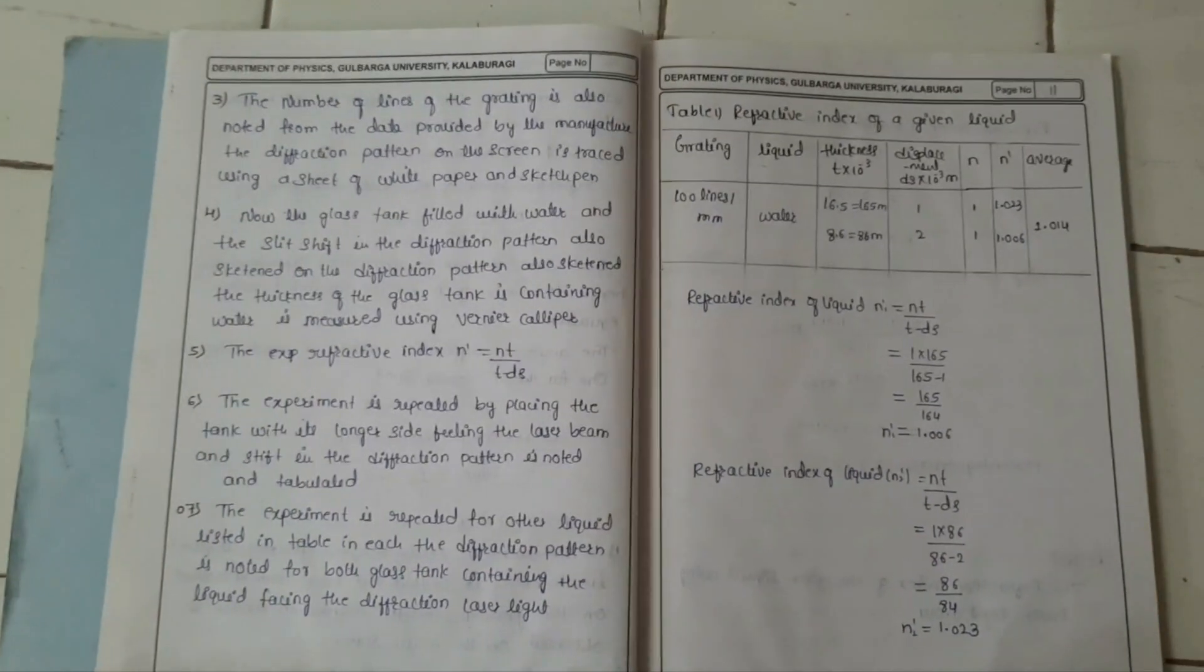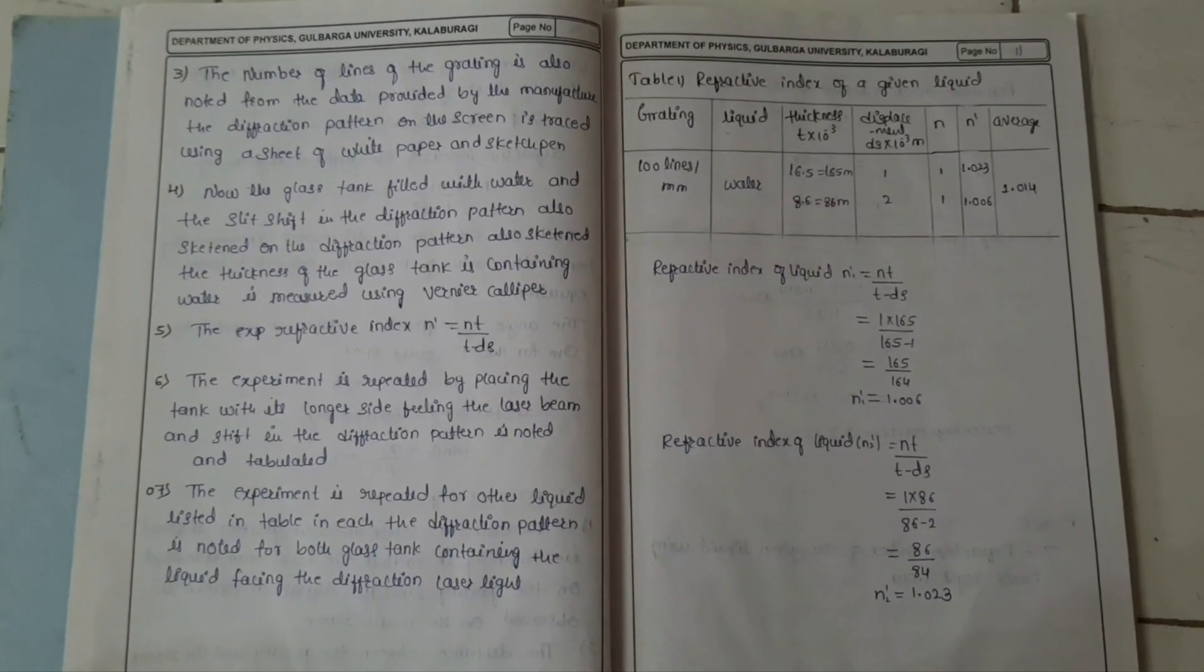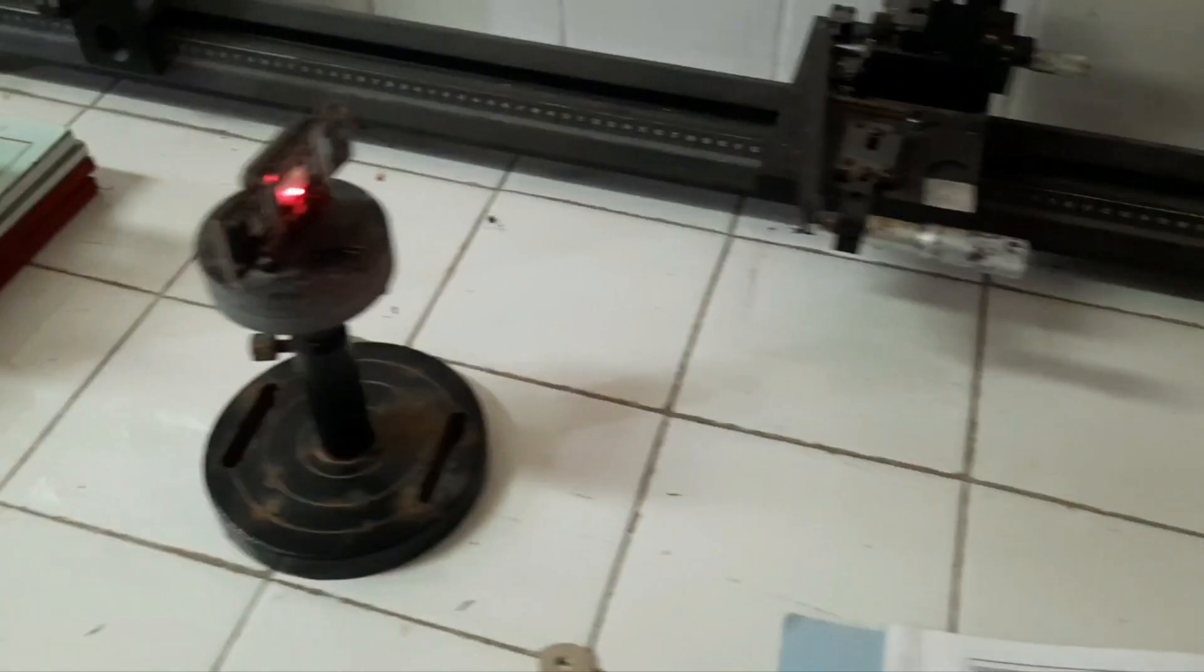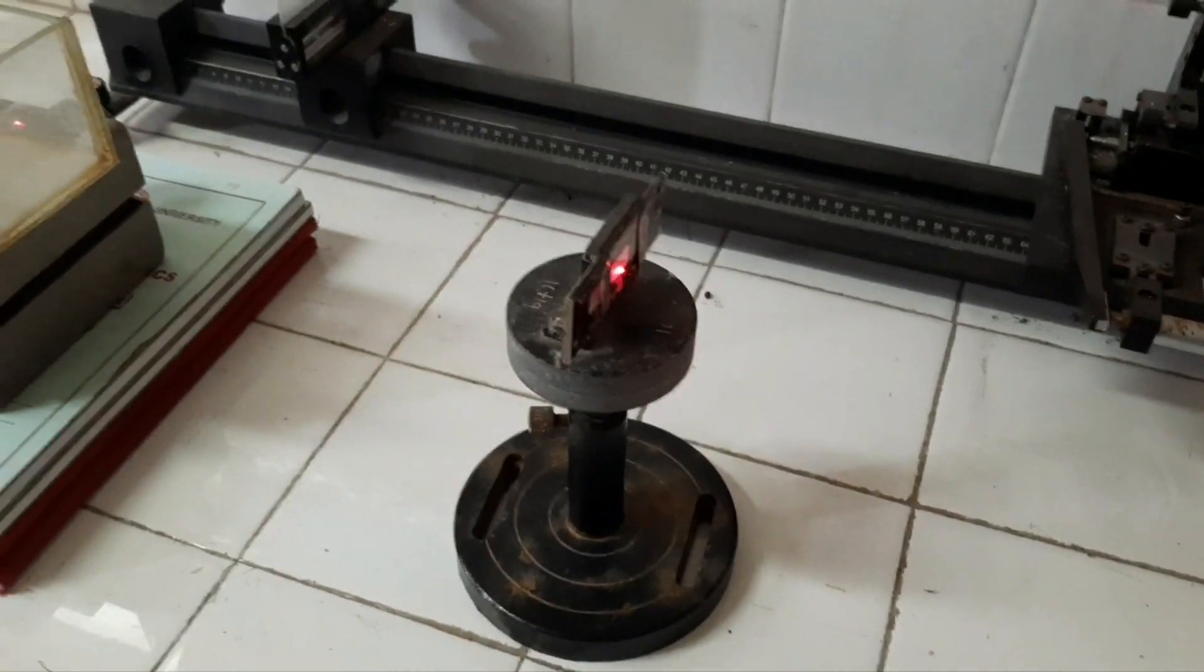So we have to measure the refractive index of a given liquid. So the procedure as we know, we have to first adjust this experimental setup: laser, grating stand, grating beaker and the screen.